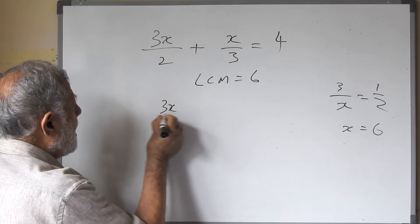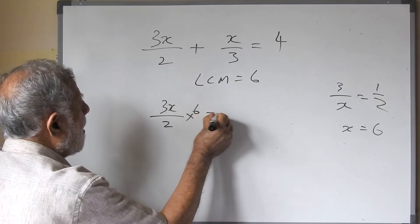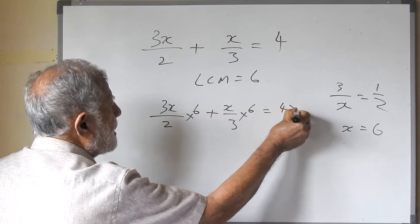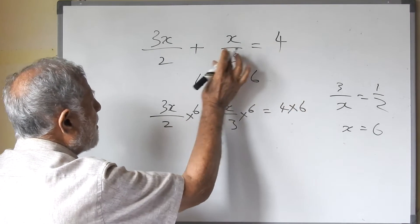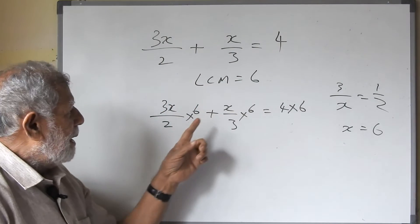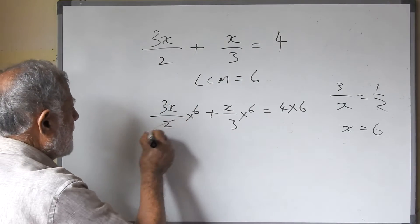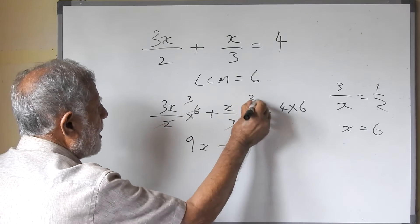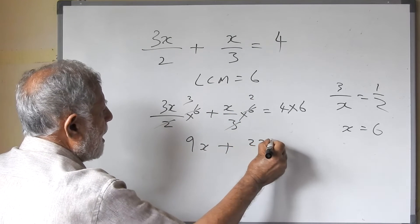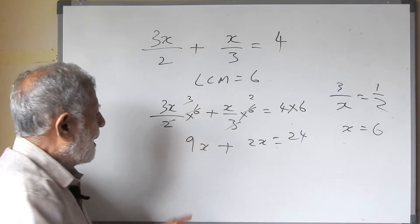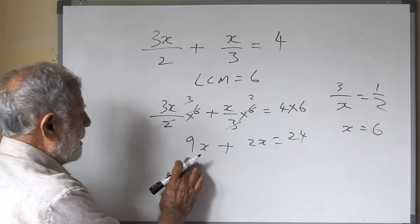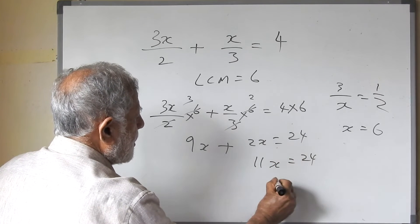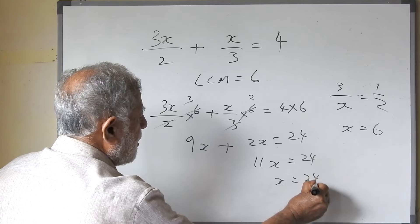So the next step: 3 upon 2 into 6, plus x upon 3 into 6, equals 4 into 6. All 3 terms are multiplied by the LCM 6. So 2 and 6 cancel to give 9x, and 3 and 6 cancel to give 2x, and 6 times 4 gives 24. So 9x plus 2x equals 11x equals 24. Therefore x is equal to 24 upon 11.